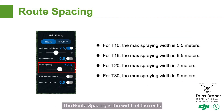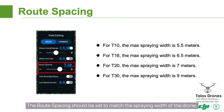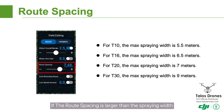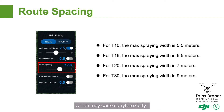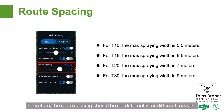The route spacing is the width of the route — that is, the distance that the agrodrone moves laterally. The route spacing should be set to match the spraying width of the drone. If the route spacing is larger than the spraying width, some areas will not be sprayed. If the route spacing is smaller than the spraying width, some areas will be sprayed multiple times, which may cause phytotoxicity. Therefore, the row spacing should be set differently for different models.